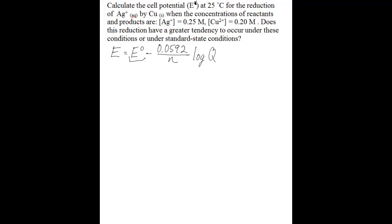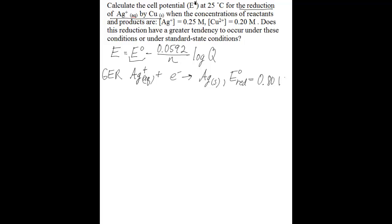In order to find the standard cell potential you need to first figure out the two half-reactions and then ultimately the balanced redox equation. The problem asks for the reduction of silver by copper solid. When you have a reduction you have a gain of electrons, so silver in its aqueous form is going to gain an electron to become silver solid. If you look up this value in a table of standard reduction potentials, you find it equals 0.80 volts.